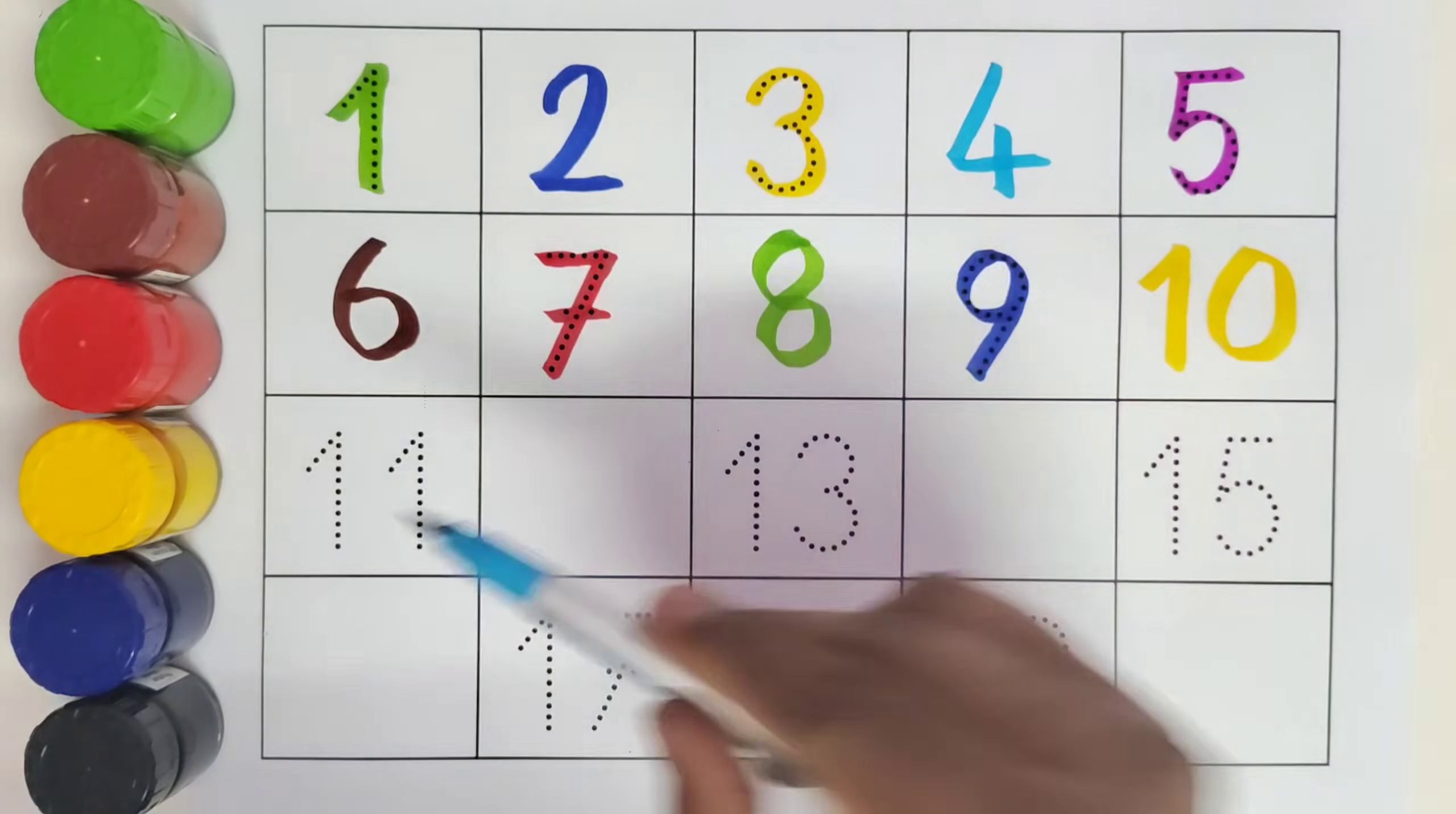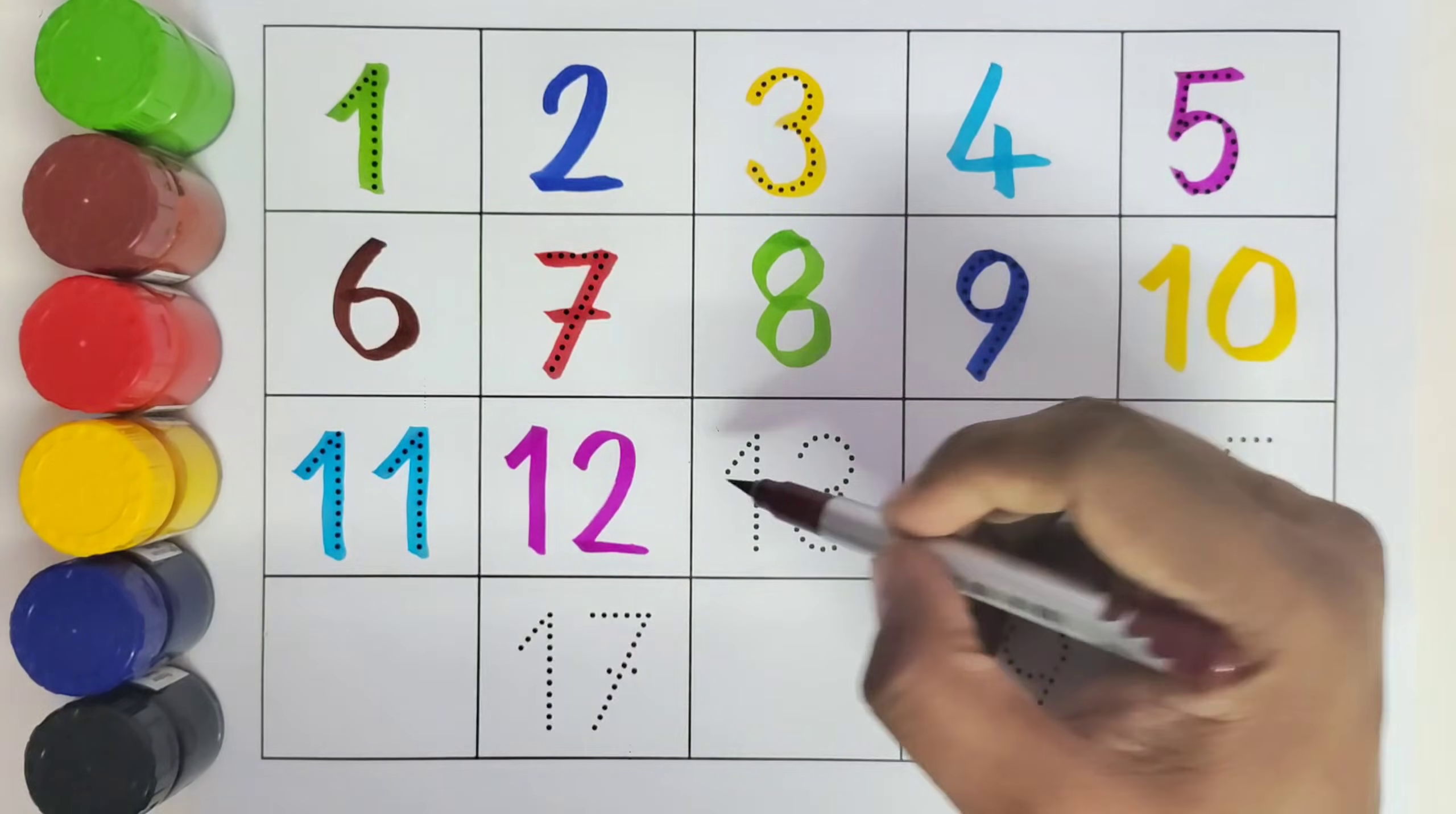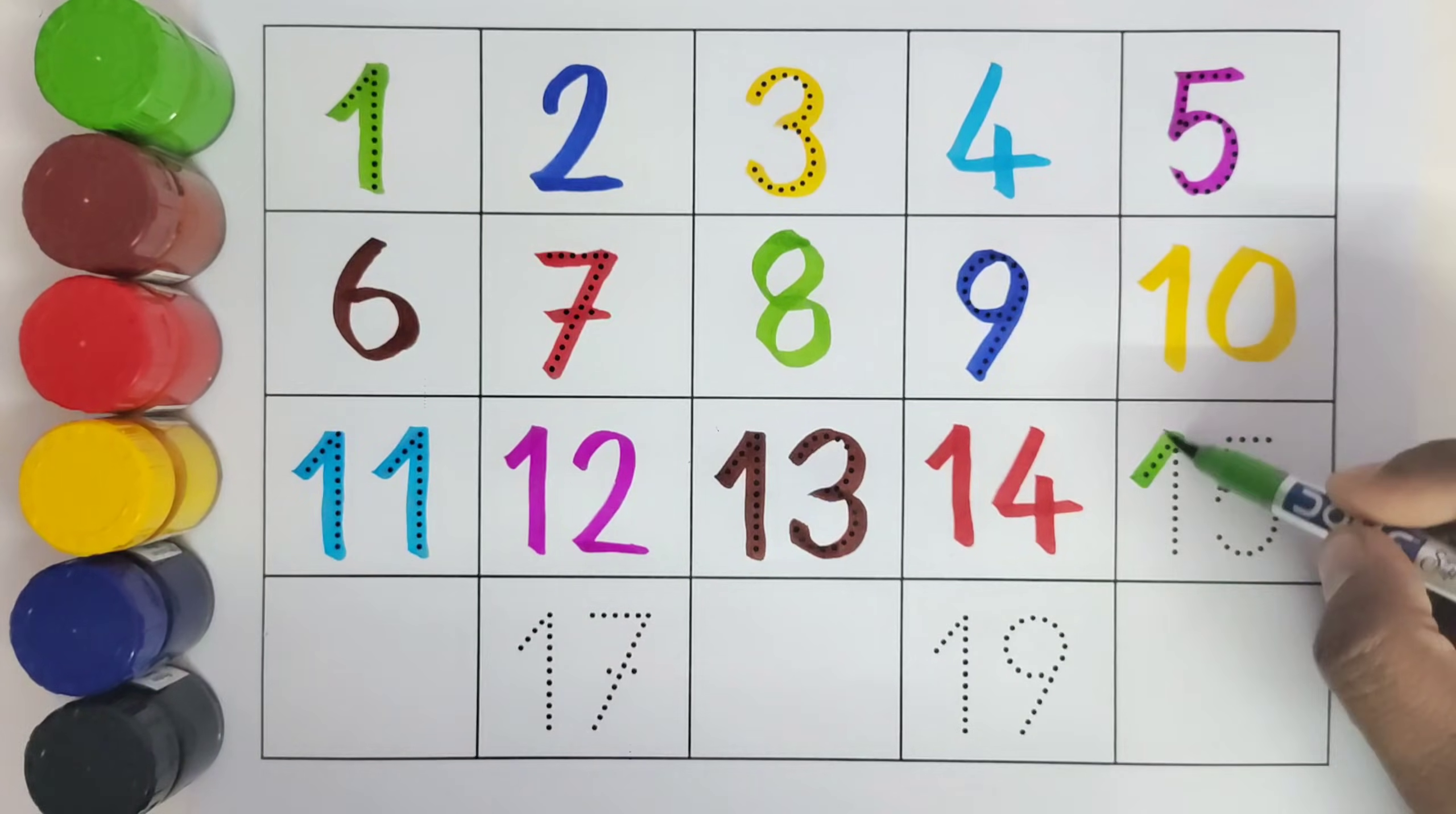This is 11. Number 11. What comes after 11? 12. Number 12. This is 13. Number 13. What comes after 13? 14. Number 14. 15. This is 15. Number 15.